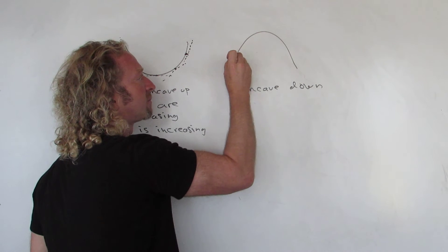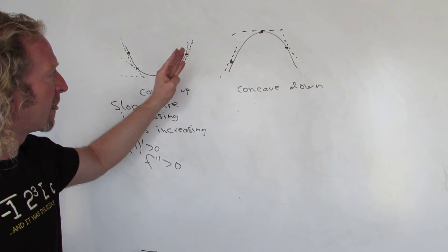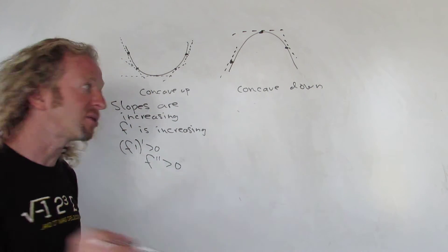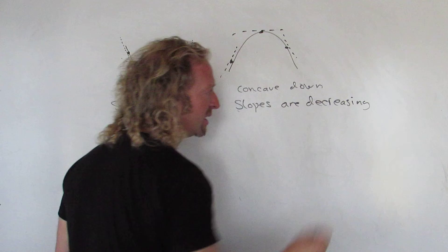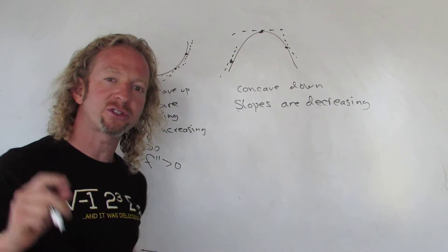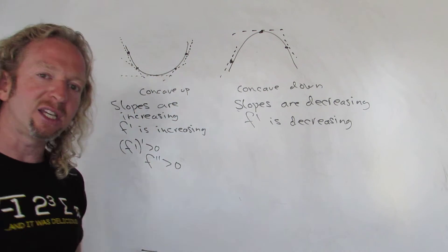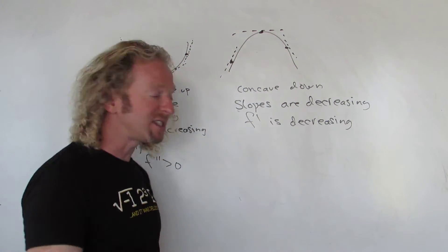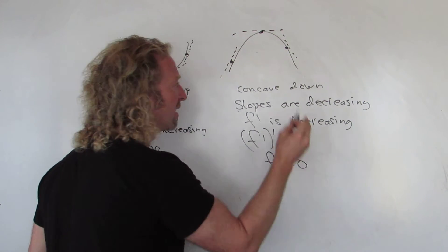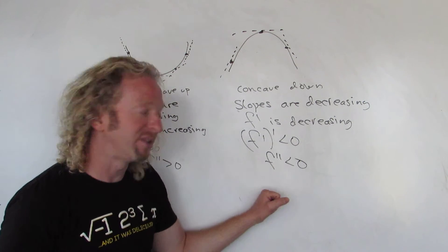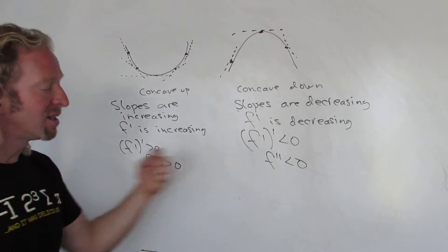What about concave down? Here we have a positive slope, then a slope of zero, then a negative slope. So the slopes are going from positive to zero to negative — the slopes are decreasing. The values of the slopes are the values of the first derivative, so the first derivative is decreasing. If a function is decreasing on an interval, its derivative is negative. So the derivative of the derivative is negative — concave down means you have a negative second derivative on an interval. So: concave up, second derivative is positive; concave down, second derivative is negative.